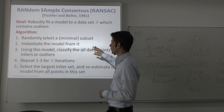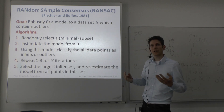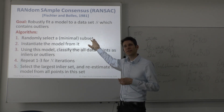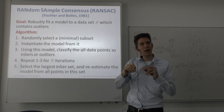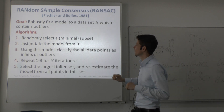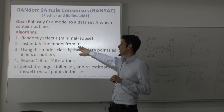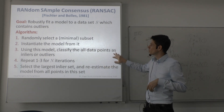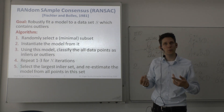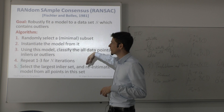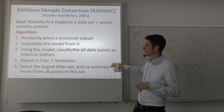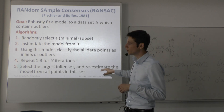The idea behind RANSAC is as follows. From the large input dataset, you select only a minimal subset just enough to estimate model parameters — for a line, that's two points. From these two points you fit the line model, then classify all points as inliers or outliers based on whether they comply with the model. You repeat this for a number of iterations, and from the model that has the largest number of inliers, you refit it again using least squares. This final estimate is robust against outliers because they were excluded during the estimation process.